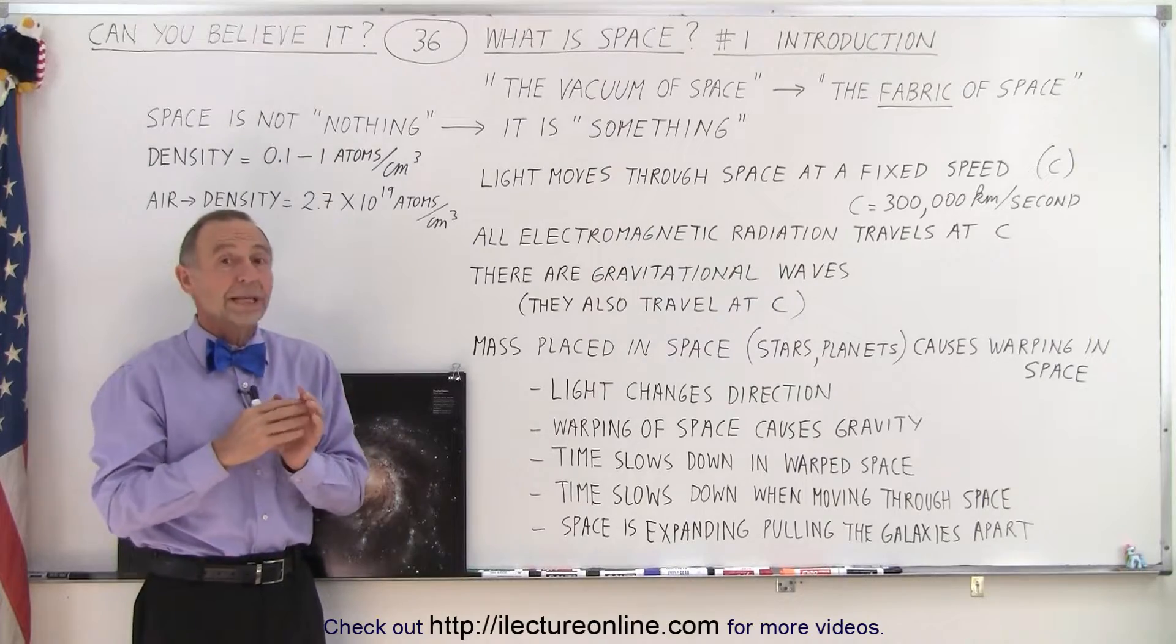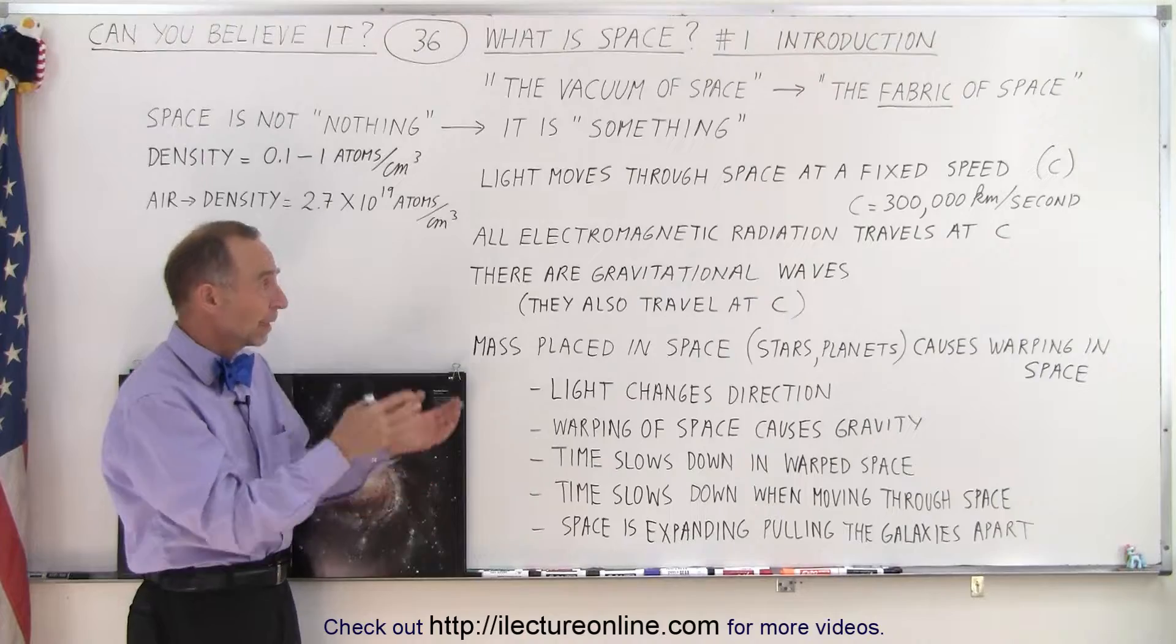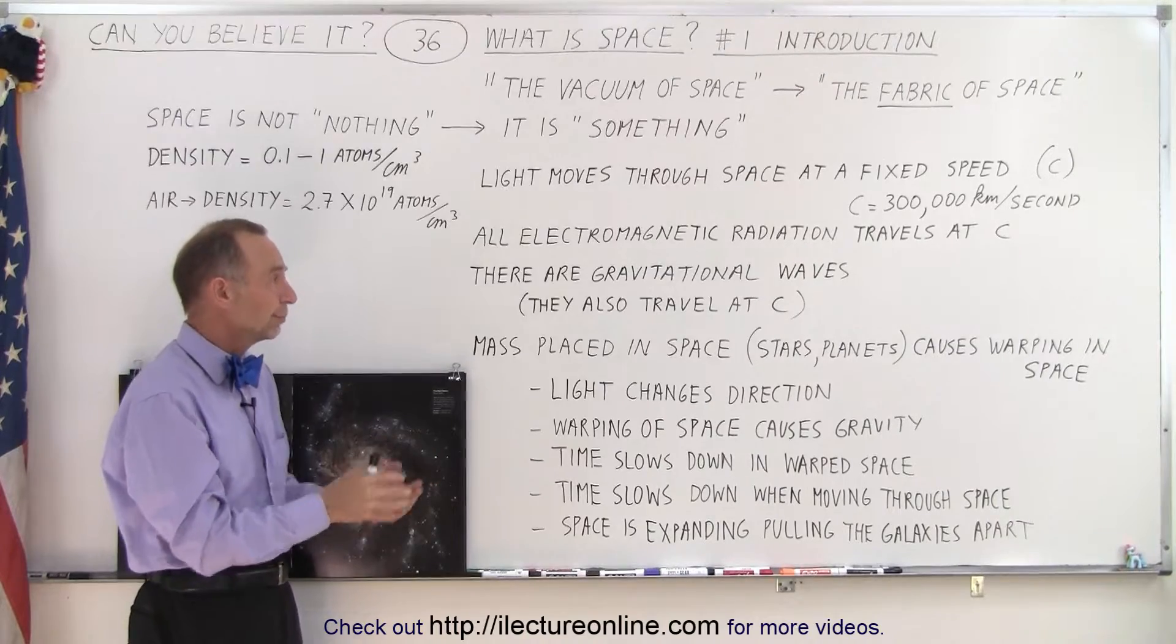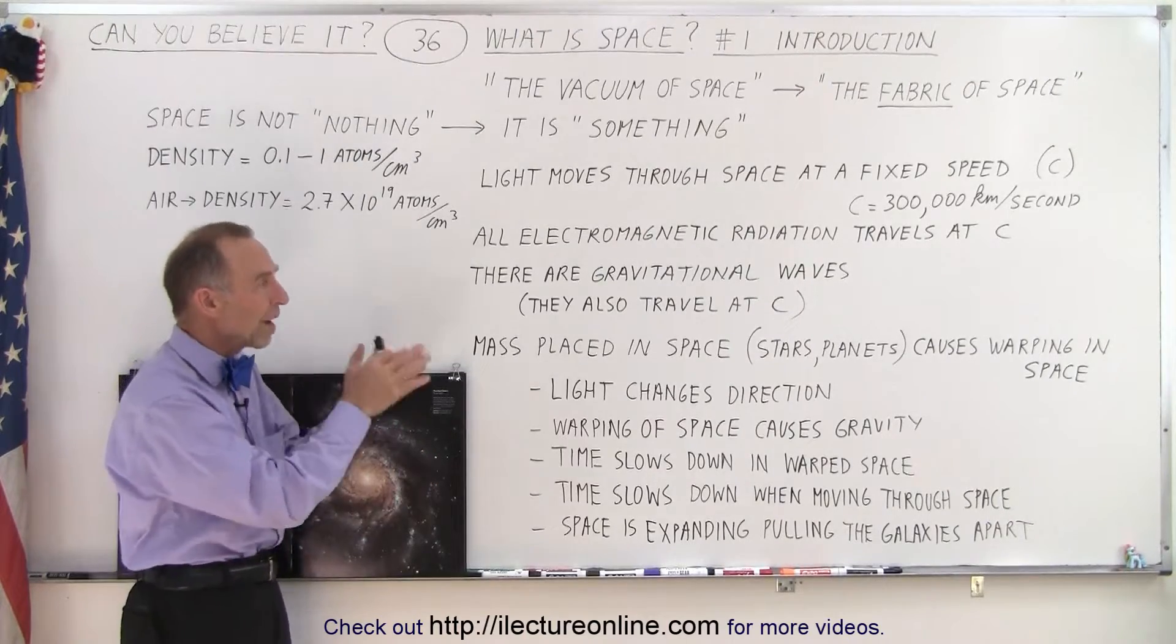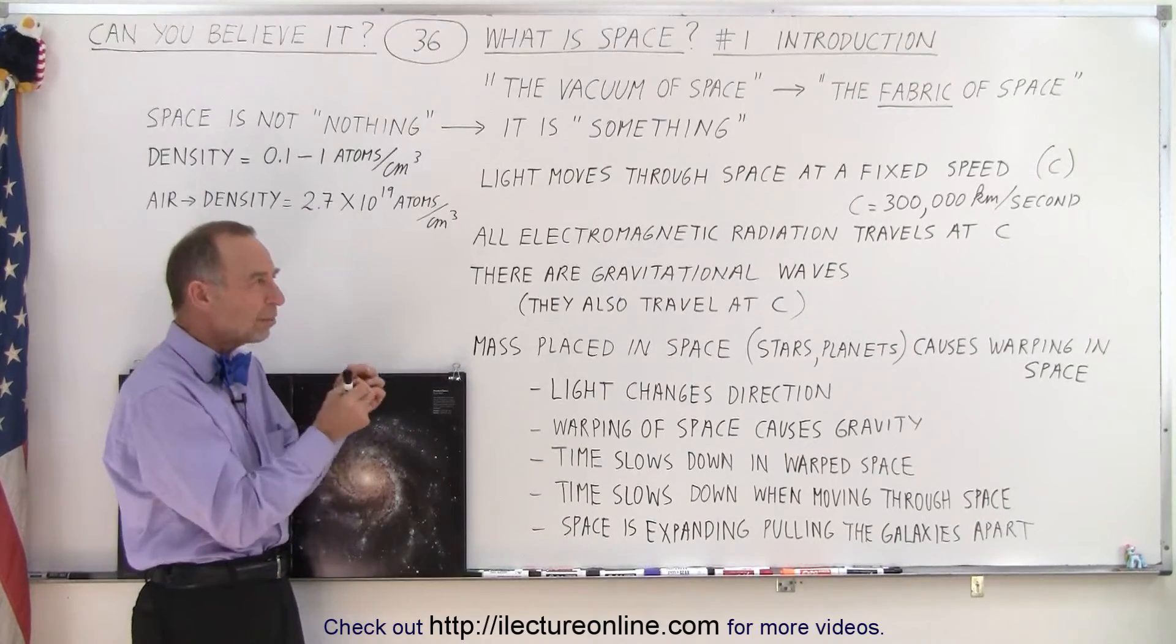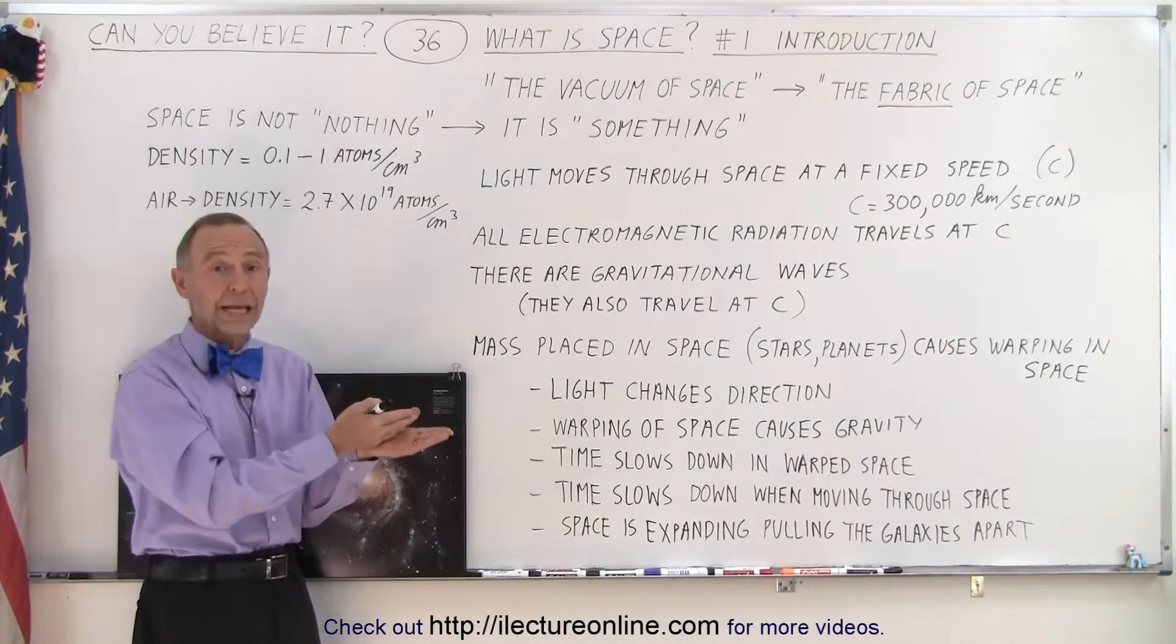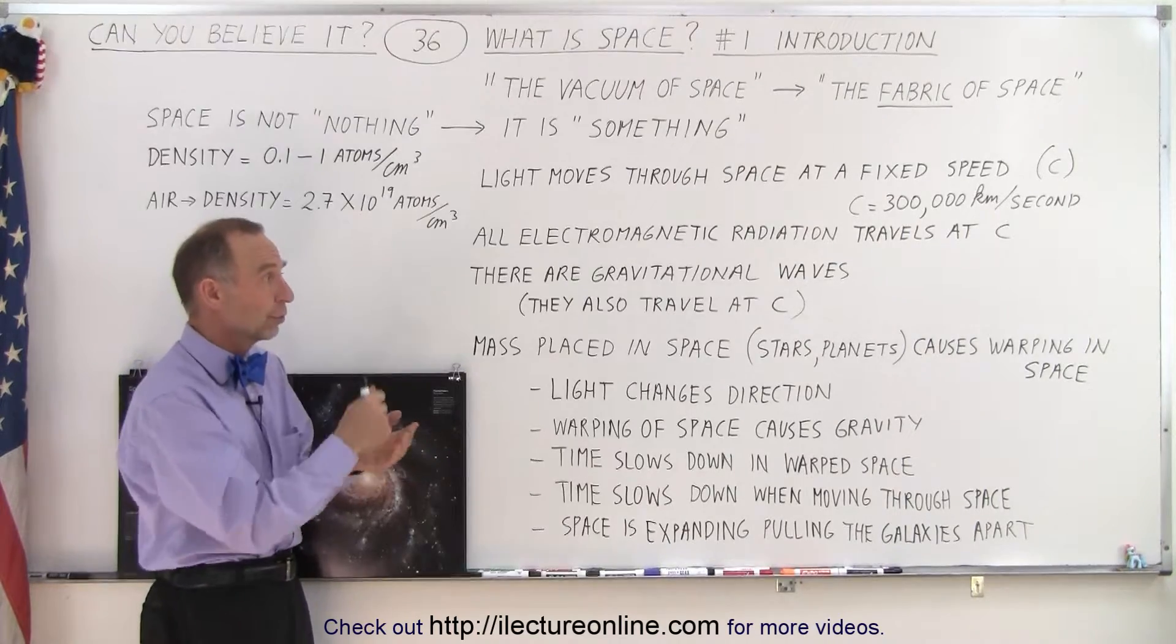That's about 300,000 kilometers per second. Well, turns out that all electromagnetic radiation, be it radio waves, x-rays, gamma rays, infrared rays, ultraviolet rays, you name it, they all travel through space at the speed of light. So there's something about space that controls the speed at which electromagnetic radiation, which includes light, travels through space.